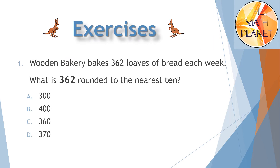Question 1: Wooden Bakery bakes 362 loaves of bread each week. What is 362 rounded to the nearest 10? We need first to determine the place value, which is the tens digit in this example. So I will circle the tens digit and put an arrow to the right of it. This means my lower benchmark is 360, and the upper benchmark is 10 more because I'm rounding to the nearest 10, so the upper benchmark is 370.